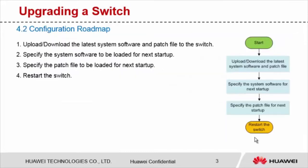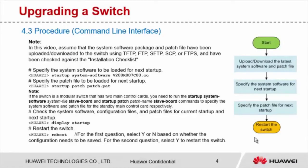Now let's see the configuration procedure, including transferring the latest system software package and patch file to the switch, specifying the system software and patch file for next startup, and restarting the switch. First, let's see how to upgrade a switch using the command line interface. Assume that the system software package and patch file have been transferred to the switch and have been checked against the installation checklist.